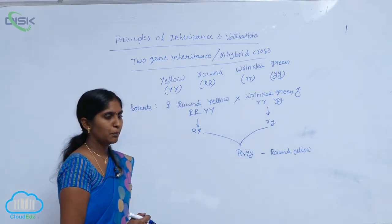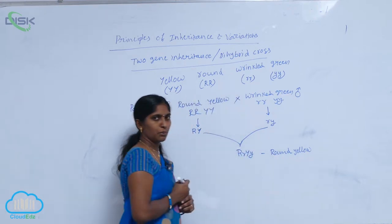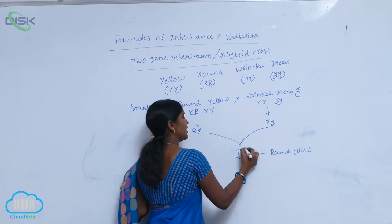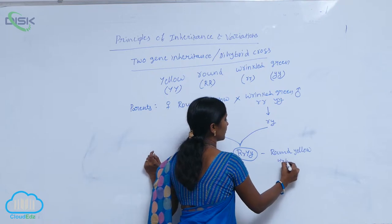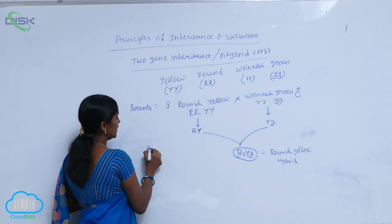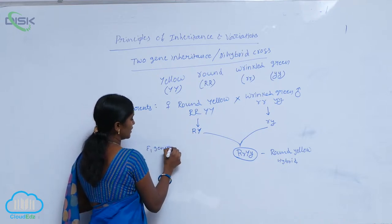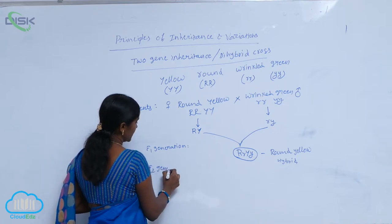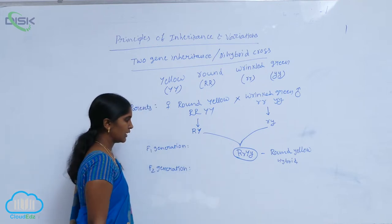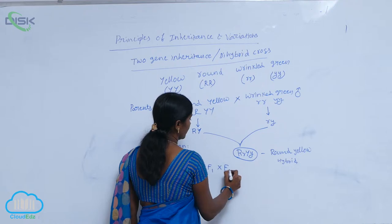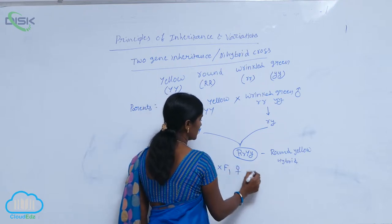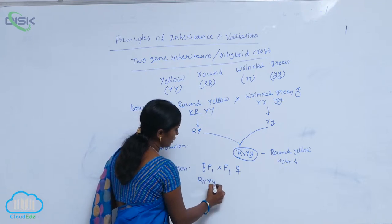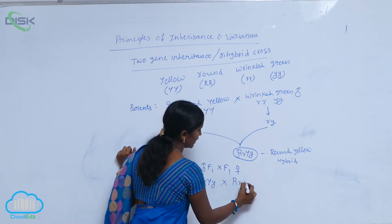The progeny shows one of the parental dominant characters. This progeny is heterozygous and also called a hybrid — this is the F1 generation. For the F2 generation, he conducted self-pollination, crossing F1 with F1. One F1 is considered female, another male: capital R small r capital Y small y crossed with capital R small r capital Y small y.